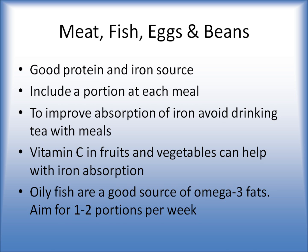Meat, fish, eggs and beans are really important in our diets because they provide us with protein and are also good sources of iron. It's important to include protein at each meal to keep your muscles strong. To improve iron absorption, avoid drinking tea with your meals — wait at least an hour to an hour and a half after eating, as tea can reduce iron absorption. Vitamin C is really helpful for iron absorption, so try to have fruits and vegetables with your meal, or a glass of fruit juice. Oily fish is also a good source of omega-3, and we should aim for one to two portions per week.